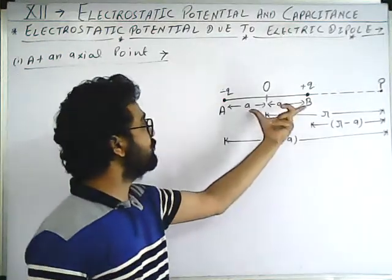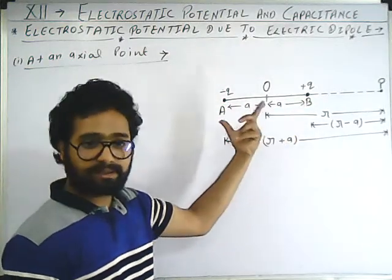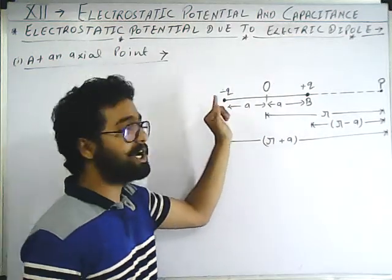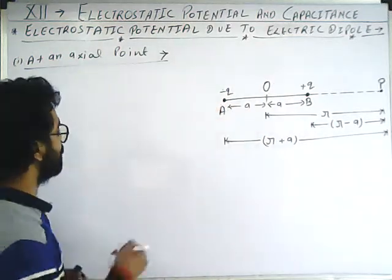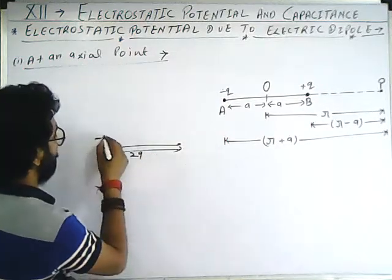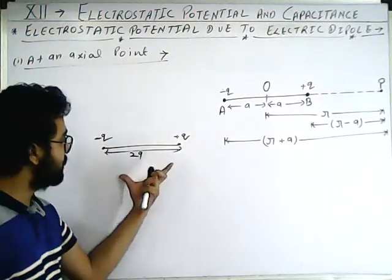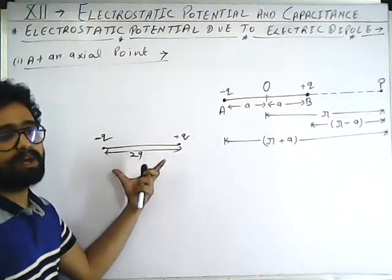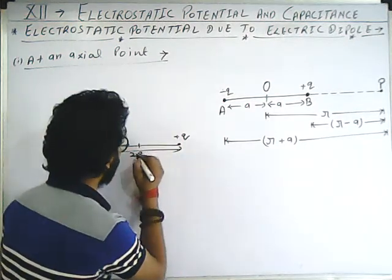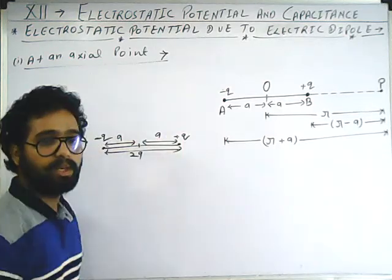Firstly we have to take a dipole. Everyone knows about the dipole — we have read it in the last cycle. The dipole has two small opposite charges separated by a small distance. This is the minus q and plus q charge.